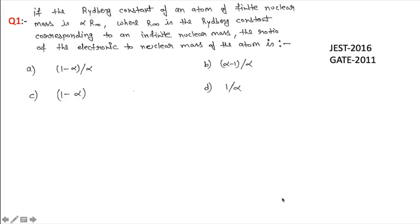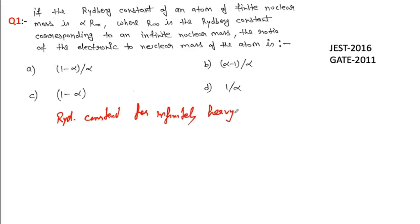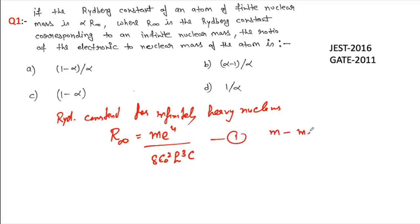The first question: if the Rydberg constant of an atom of finite nuclear mass is α·R∞, where R∞ is the Rydberg constant for infinite nuclear mass, calculate the ratio of electronic to nuclear mass. The Rydberg constant for infinitely heavy nuclei is R∞ = me⁴ / (8ε₀²h³c), where m is the mass of the electron.